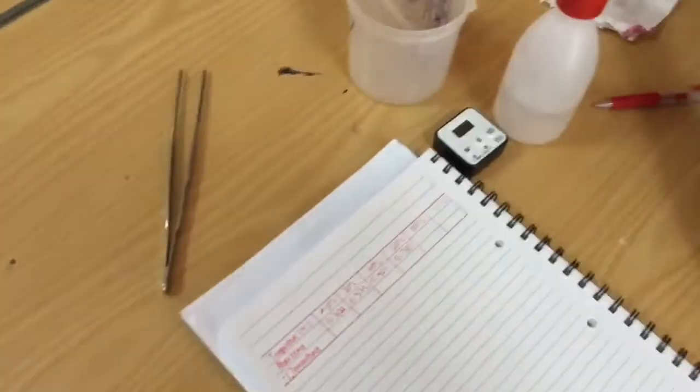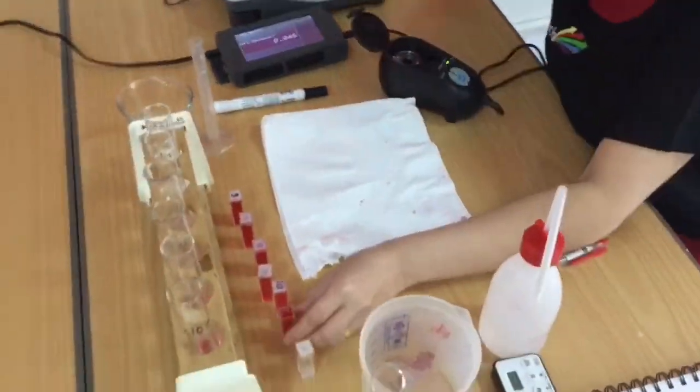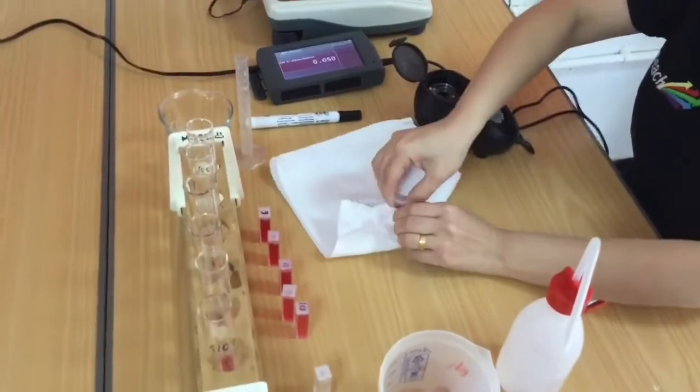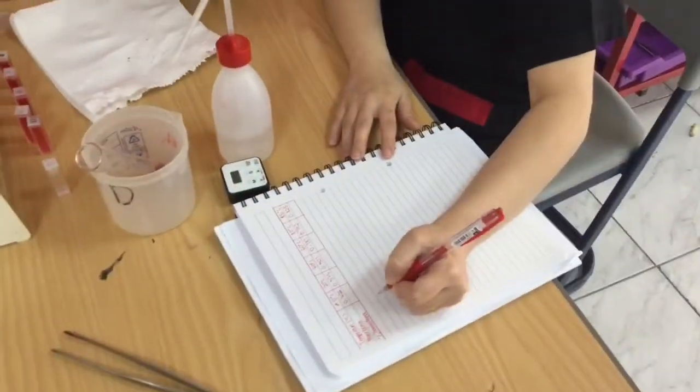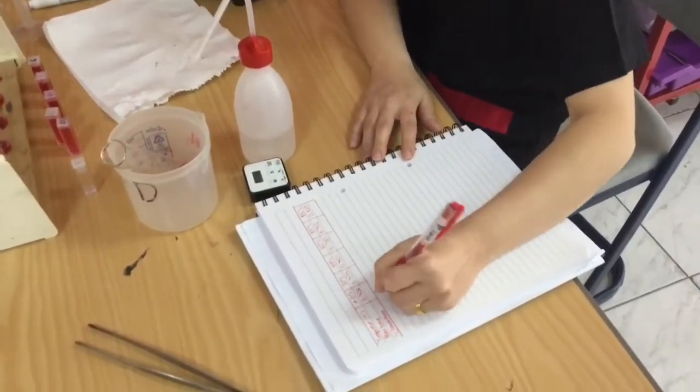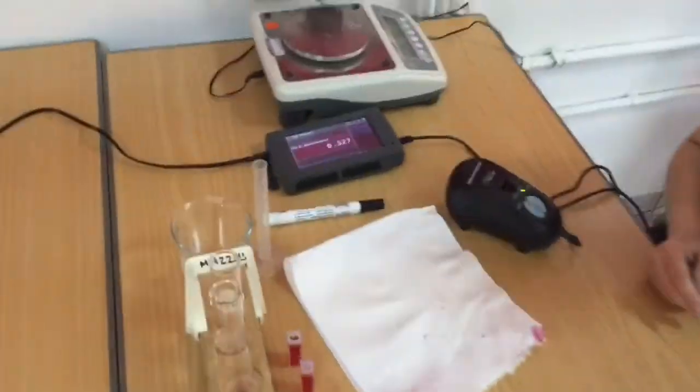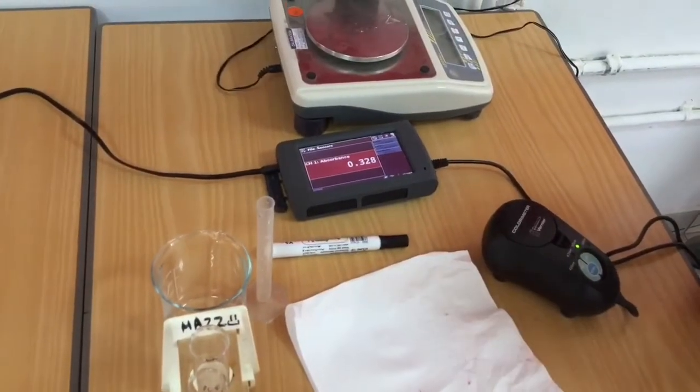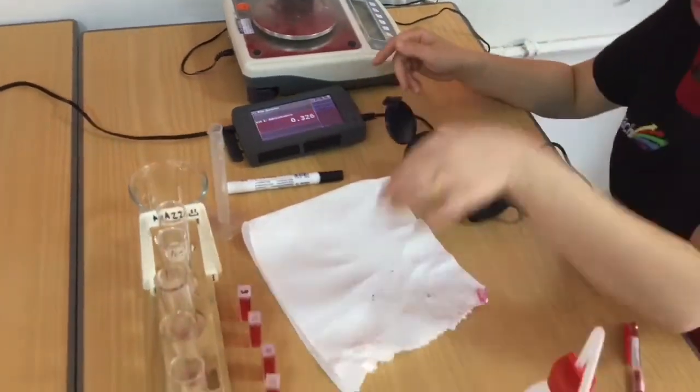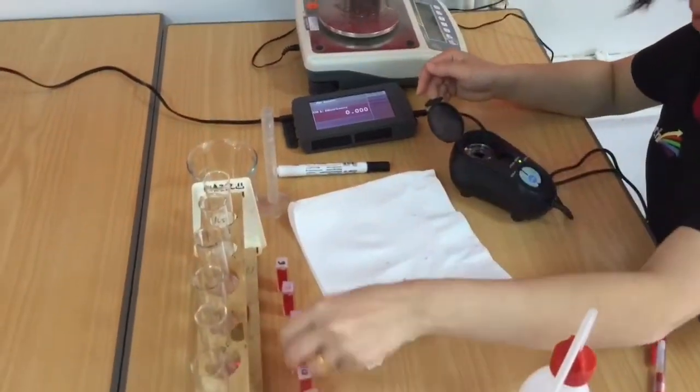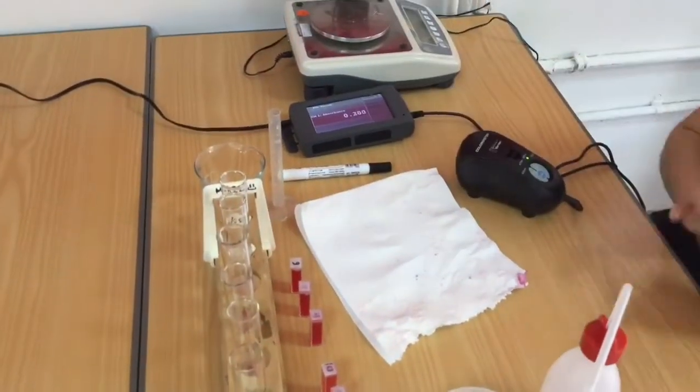As my results are being placed into the table, I can see that the pattern isn't quite what I expect. So I'm quickly going to extend my table and I'm going to do the readings again. However, what I'm going to do between each reading is pop the cuvette with distilled water back in there to ensure that the reading is zero, that my datalogger, my colorimeter, stays calibrated.